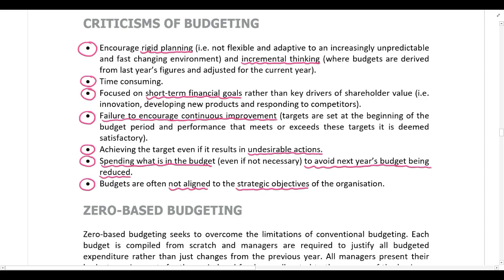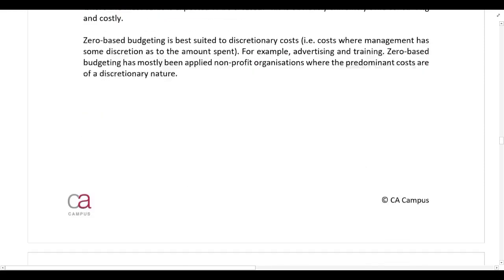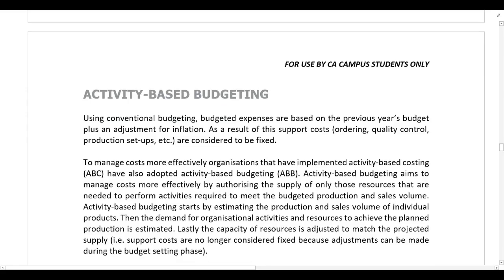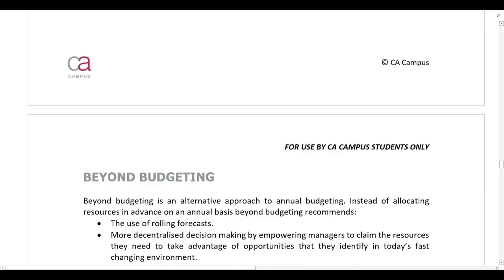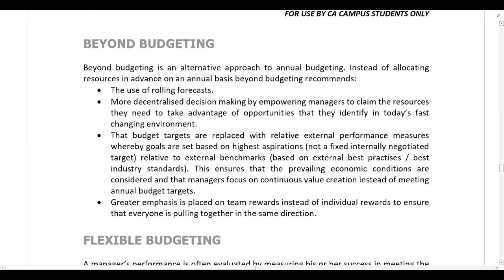The next four sections — zero-based budgeting, activity-based budgeting, rolling forecasts, and beyond budgeting — all focus on budgeting techniques that attempt to overcome the limitations of conventional budgets. Please read through these sections on your own.